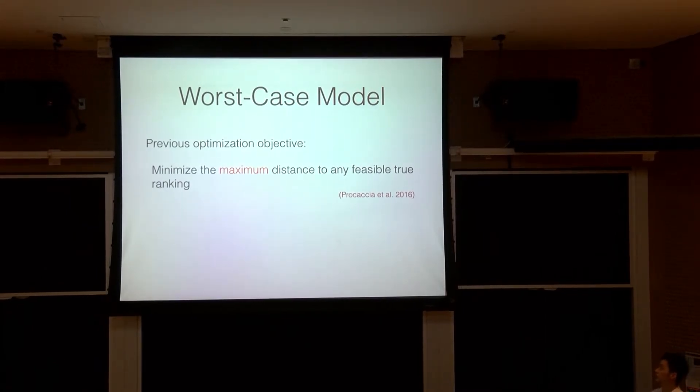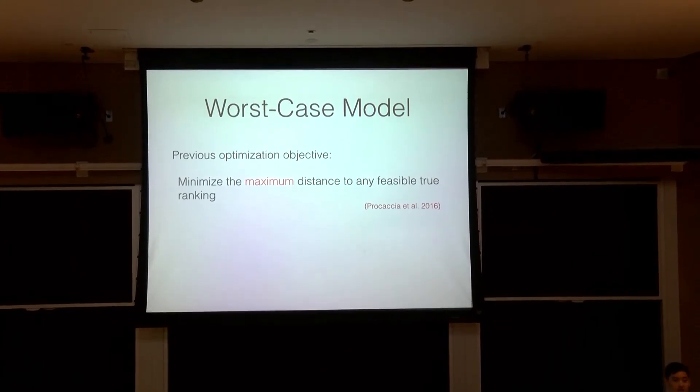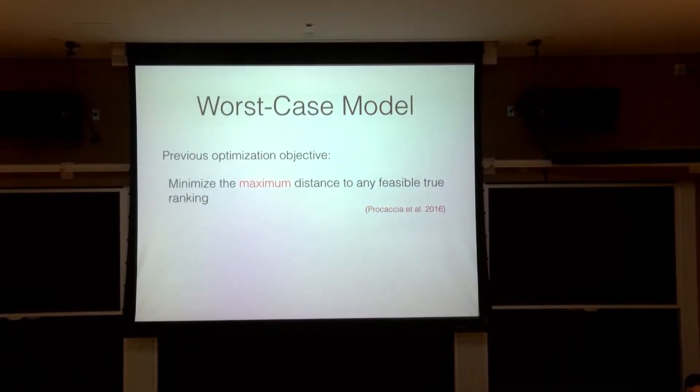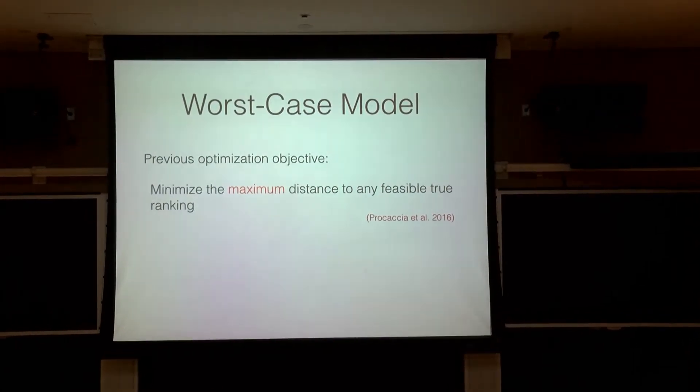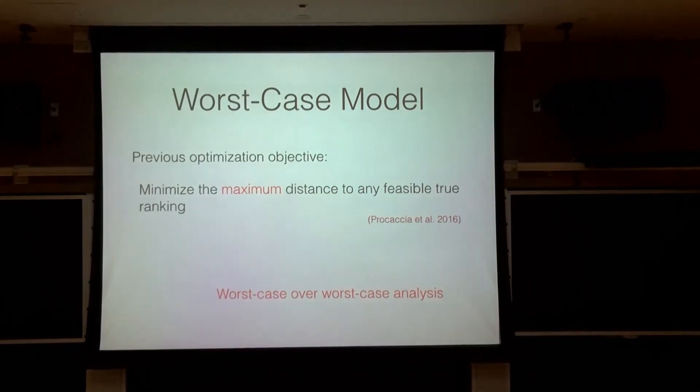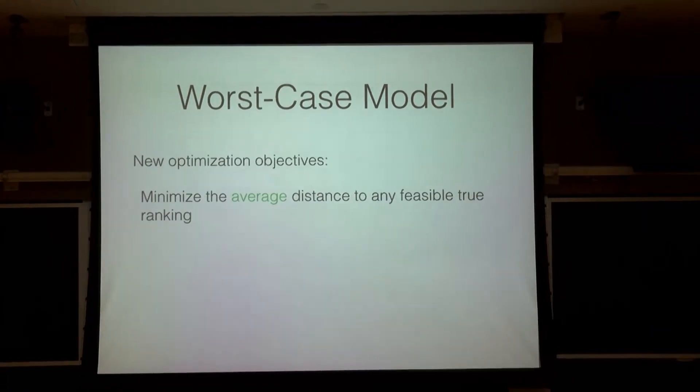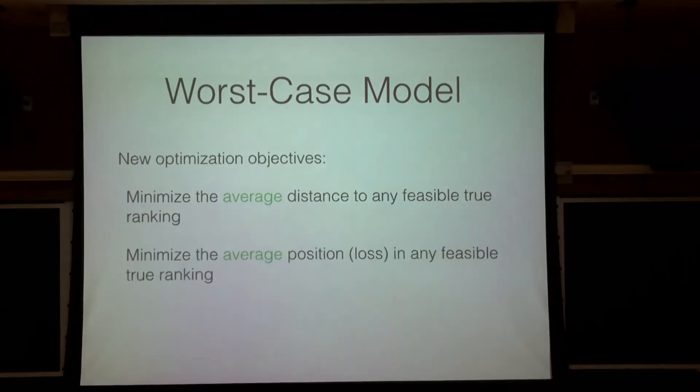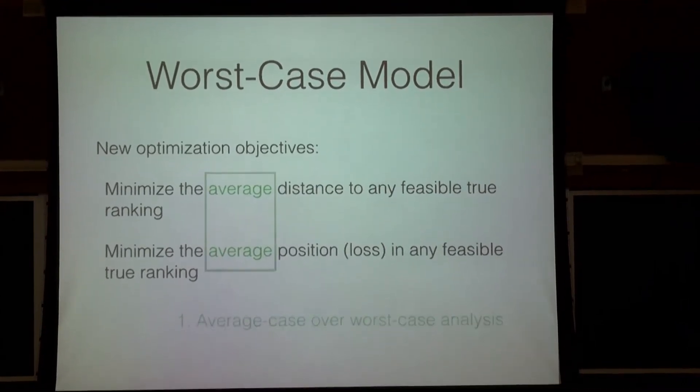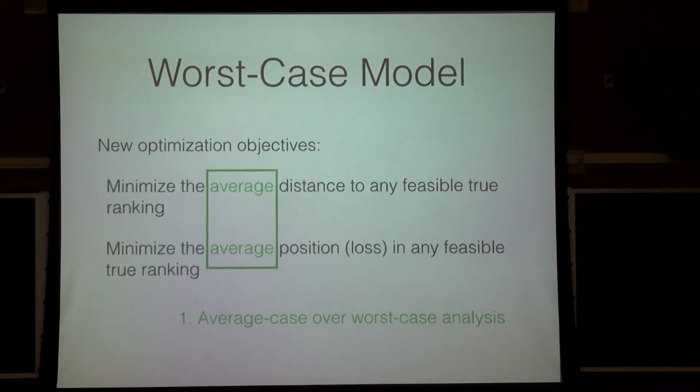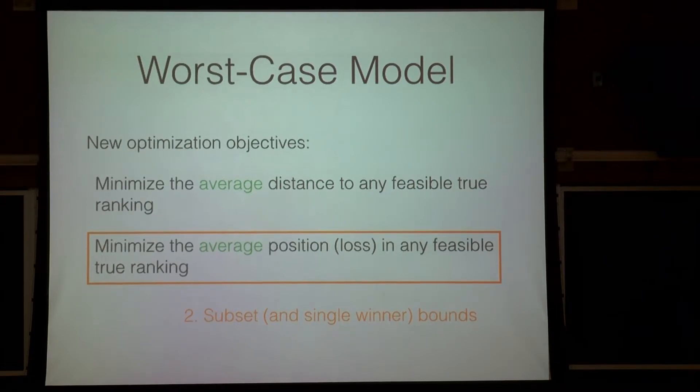So, before, in 2016 work, you wanted to minimize the maximum distance to any feasible true ranking. And this was a natural first step when looking at worst-case analysis. We took the worst case over the worst case, right? In contrast, this work introduces two new things. The first is that you want to minimize the average distance to any feasible true ranking. And the second thing is we extended this to subset and single winner bounds. So, you want to minimize the average position or loss in any feasible true ranking. So, to summarize, the first thing we did was introduce average case over worst-case analysis. And the second thing we did was introduce subset and single winner bounds in this average case scenario.